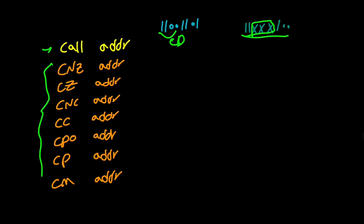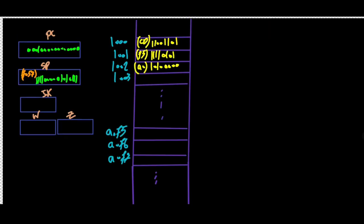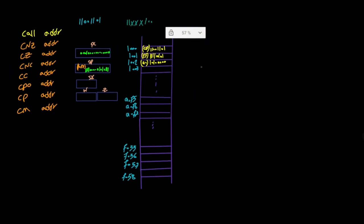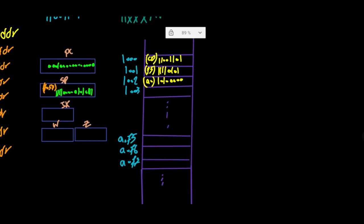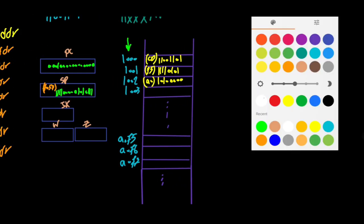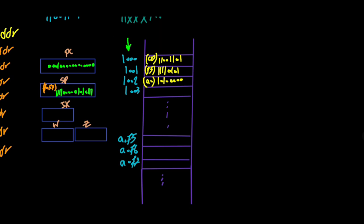Now we want to explain how CALL addr works in memory. Let's say this is our memory, and we have the value 11001101 at address 1000h in memory — addresses are in hex. The value of PC is also 1000h, or these 16 bits in binary. So obviously the first thing that would be done is a memory fetch, causing 11001101 (CD) to be brought into the IR register to be decoded.